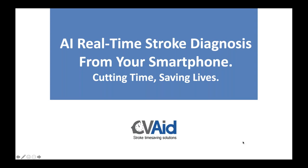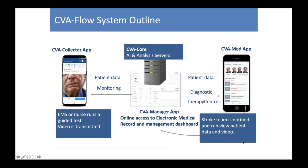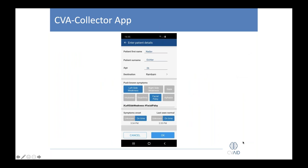CV AID is primarily focused on doing a digital stroke scale score. A trained provider — either EMS or a nurse — can just video the patient and put them through a battery of modified tests. This gets uploaded to the cloud, where the AI analyzes muscle facial weakness patterns, arm weakness patterns, and speech disturbance patterns. The AI can learn and correlate what is highly predictive of stroke and differentiate: this facial weakness pattern is predictive of stroke.